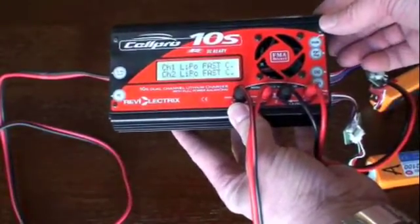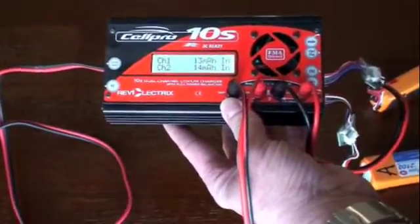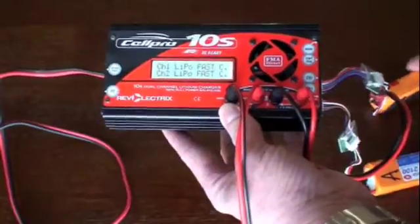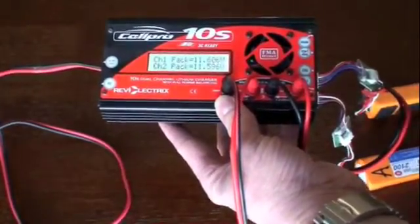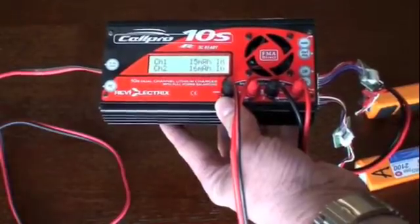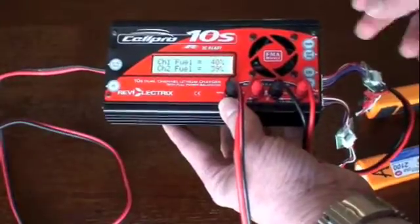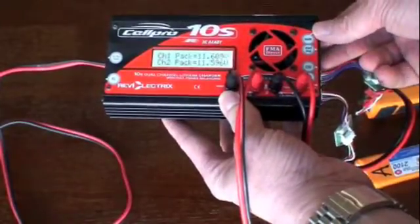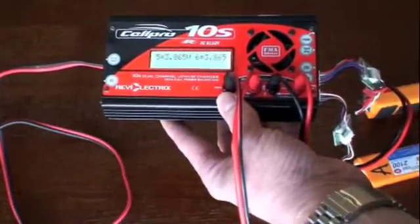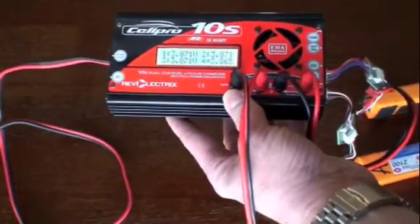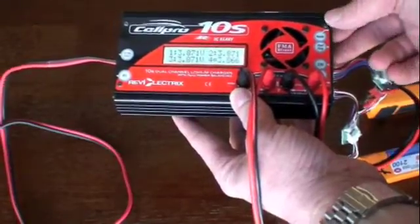So you can see here channel one, channel two, it tells us how much fuel—that's CellPro's way of telling you how much voltage is currently stored in each cell individually. It cycles through and tells you how many amps have been pumped into these packs. Keep cycling here and it will actually tell you the voltages across all of the cells in each of the packs. So that's all good.